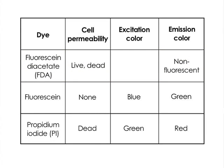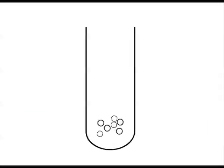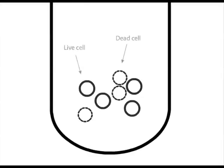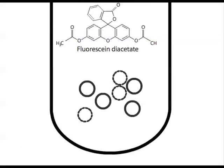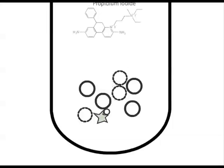Once inside a live cell, intracellular esterases convert fluorescent diacetate into fluorescein, which is highly fluorescent and cell membrane impermeable. PI is only permeable to dead cells. Cells are mixed with both FDA and PI.